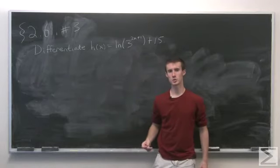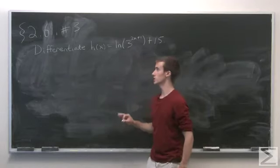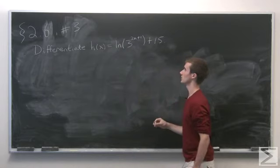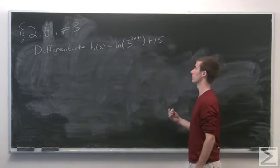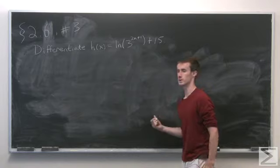Problem number 3 of section 2.6 asks us to differentiate this function here, h of x equals natural log of 3 to the 2x plus 1 plus 15.